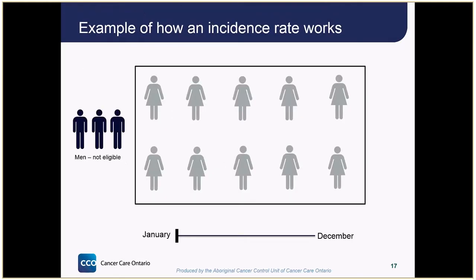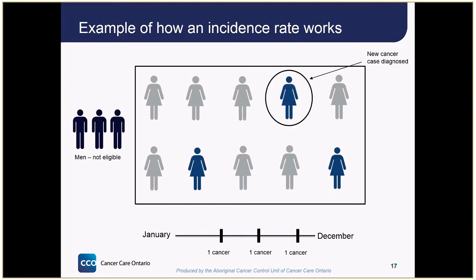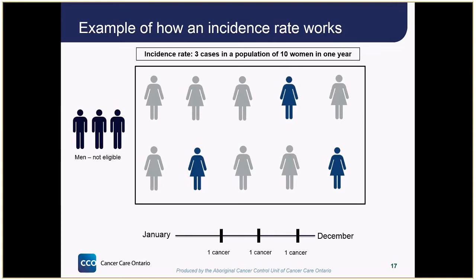Here's an example of how incidence rates work. Let's say we're looking at a cancer that only affects women, so we wouldn't include men in our population. We have a pretend population of 10 women that we follow over the course of one year to see how many are diagnosed with cancer. As we move through the year, one woman is diagnosed, then a second, and finally, towards the end of the year, a third. So we would say that our incidence rate for this cancer is three cases in a population of 10 women in one year. In the real world, cancer incidence rates are much lower than in this example.